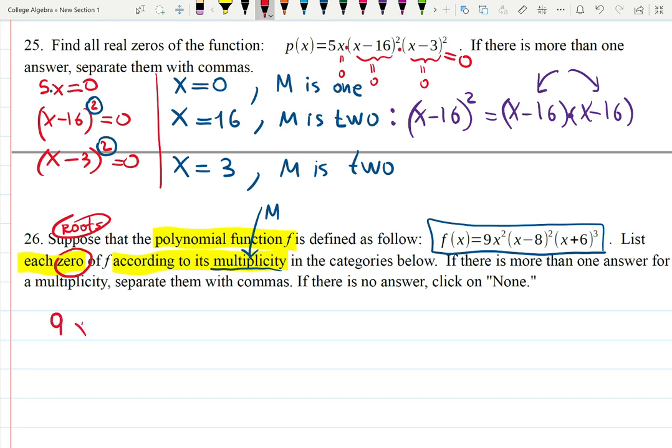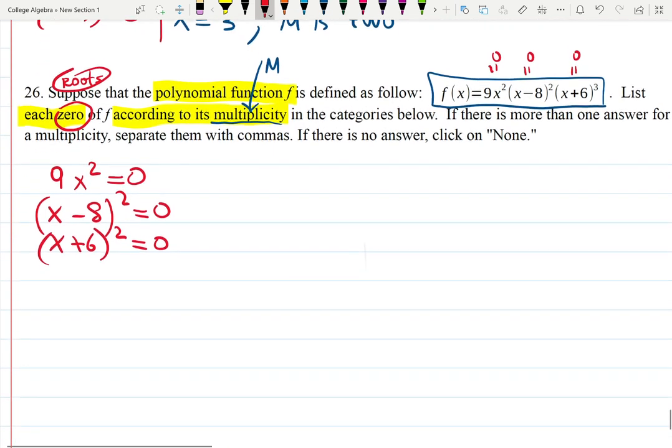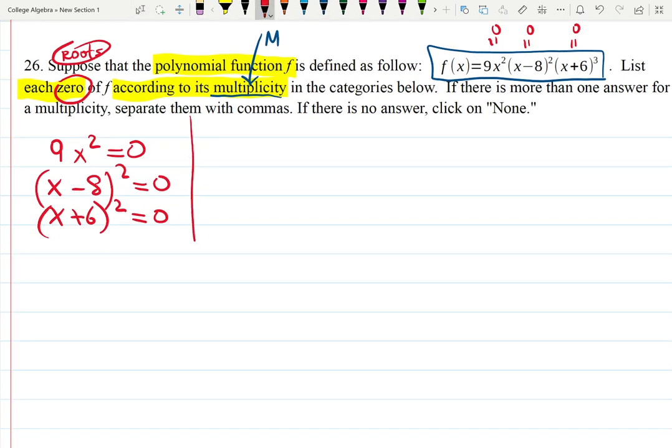It's going to be 9x² equals 0, x-8 squared equals 0, and x+6 cubed equals 0. We're setting them to be zero. At some point you learn how to skip all of those steps and give the answer right away.